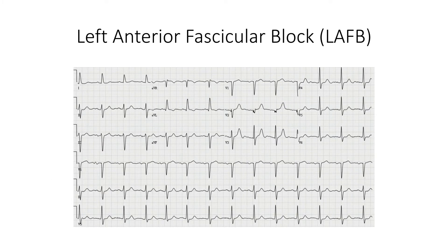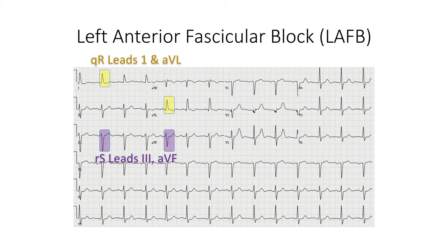First, we have left anterior fascicular block. Notice several features on the ECG denoting that the anterior fascicle in the left bundle branch is out. First, notice that leads 1 and AVL have a small Q and a large R wave. Second, notice that leads 3 and foot have a small R wave and a large deep S wave. Third, look at the deep S wave and reciprocal opposite-pointing T wave in the QRS.